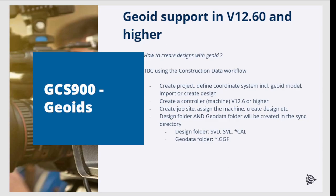When using the construction data workflow in TBC, perform the following steps: create a project in TBC, define the coordinate system which includes a GeoEat model, and import or create a design. Then create a controller — importantly, it must be version 12.6 or higher. After that, create a job site, assign the machine, and create a design. TBC will create a sync directory containing a design folder and a GeoData folder. The design folder will contain the SVD, SVL, and CAL files, and the GeoData folder will contain the required GeoEat file. After that, copy everything onto the USB stick.